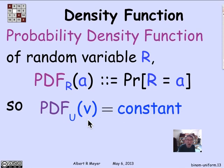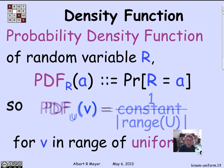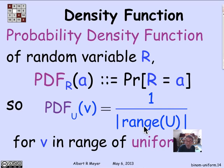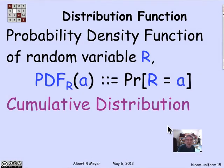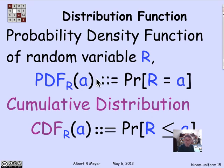The PDF of the binomial random variable with parameters N and P at I is N choose I times P^I times (1−P)^(N−I), where I is an integer from 0 to N. For a uniform variable, the PDF is constant — the same for every possible value V in the range of U — specifically 1 over the size of the range of U. A closely related function is the cumulative distribution function, which is the probability that R is less than or equal to A. Given the PDF you can get the CDF, and given the CDF you can get the PDF.